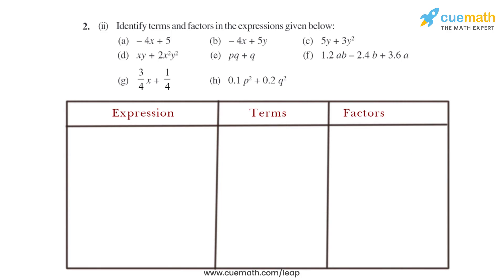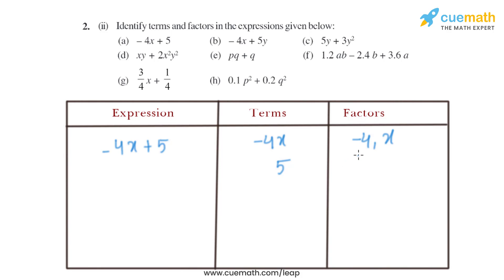The second part of question 2 says: identify terms and factors in the expressions given below. Starting with the first expression: minus 4X plus 5. The terms are minus 4X and 5. The factors of minus 4X are minus 4 and X, as both can divide minus 4X completely. The factor of 5 is 5 only, as 5 is a constant term.